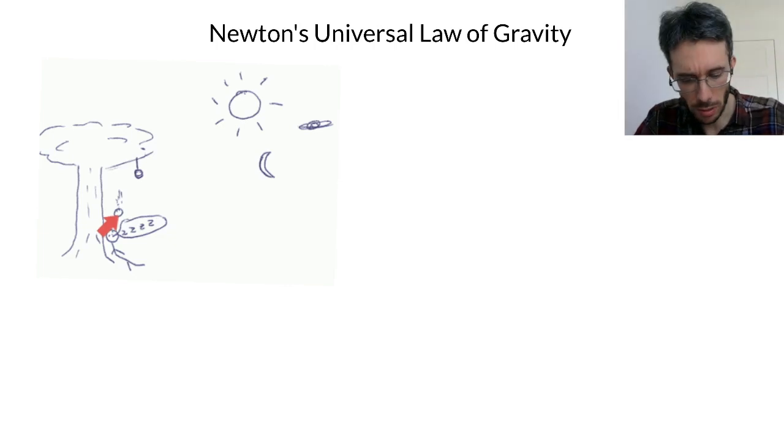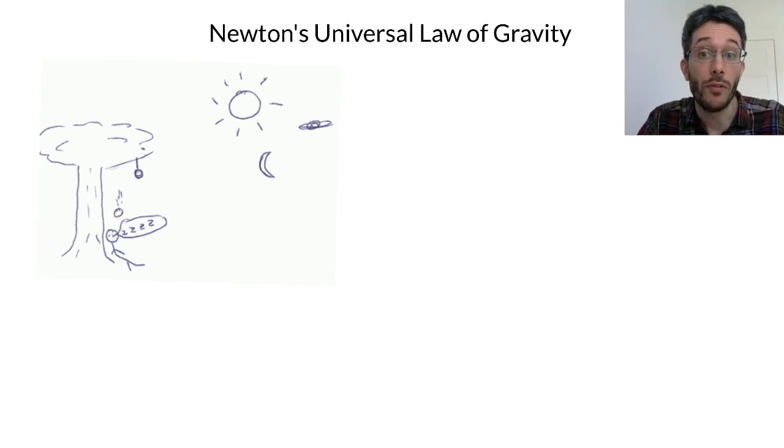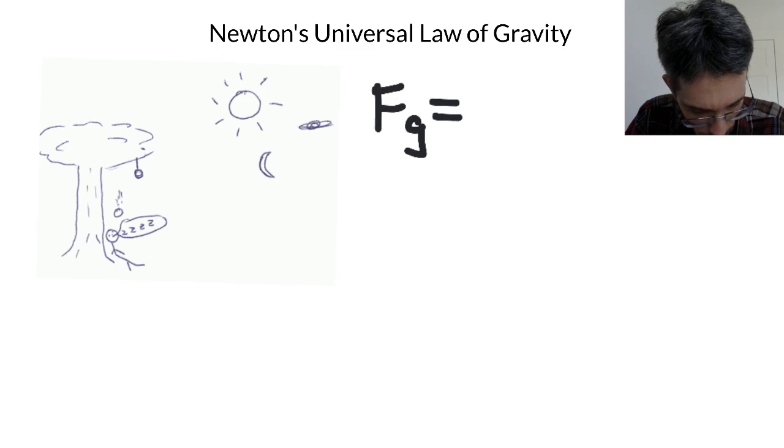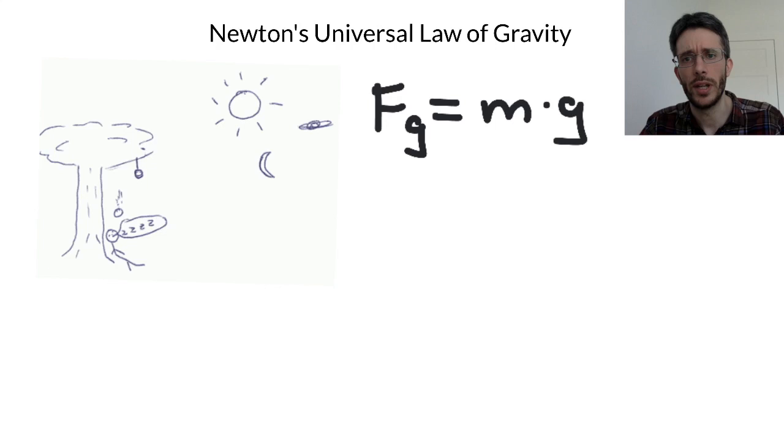You probably have also calculated the force of gravity as F equals mg. So Fg equals mg where you have used a value of 9.8 newtons per kilogram or meters per second squared—it's the same unit—to calculate the force of gravity on any object on the surface of the planet Earth.